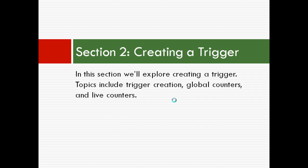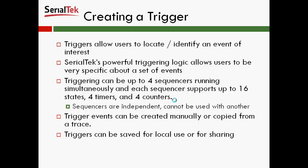We'll explore creating a trigger. Topics include trigger creation, global counters, and live counters. Triggers allow users to locate and identify an event of interest. Serial Tech's powerful triggering logic allows users to be very specific about a set of events. Triggering can be up to four sequencers running simultaneously, and each sequencer supports up to 16 states, four timers, and four counters. Please also note that sequencers are independent and cannot be used with another. Trigger events can be created manually or copied from a trace, and triggers can be saved for local use or for sharing.